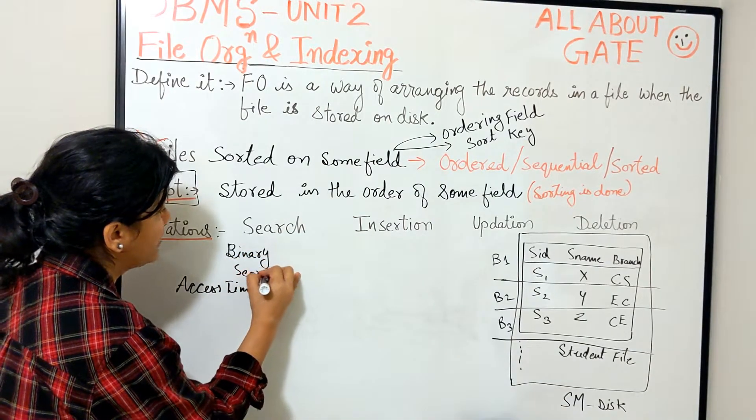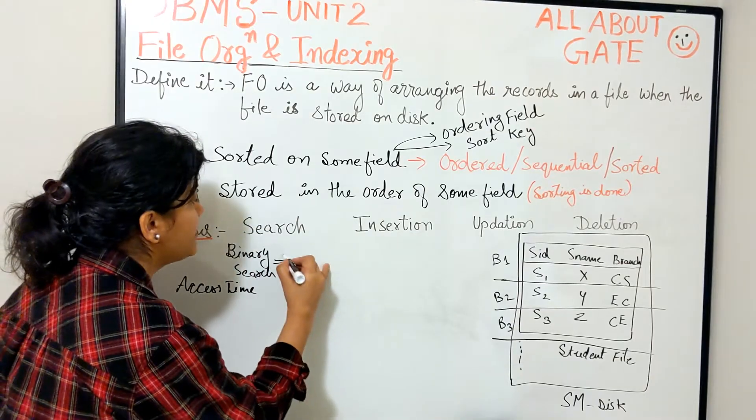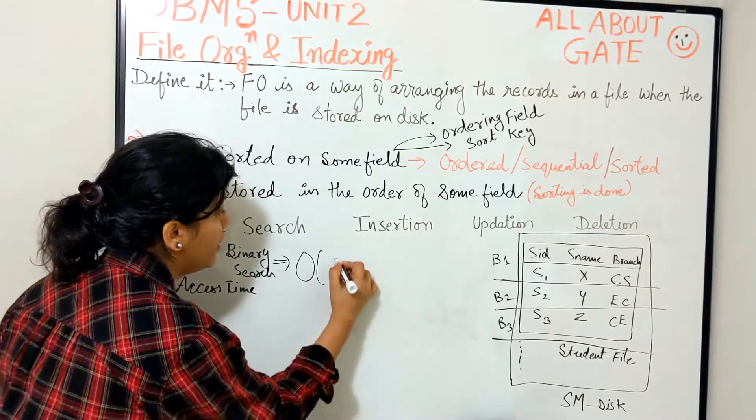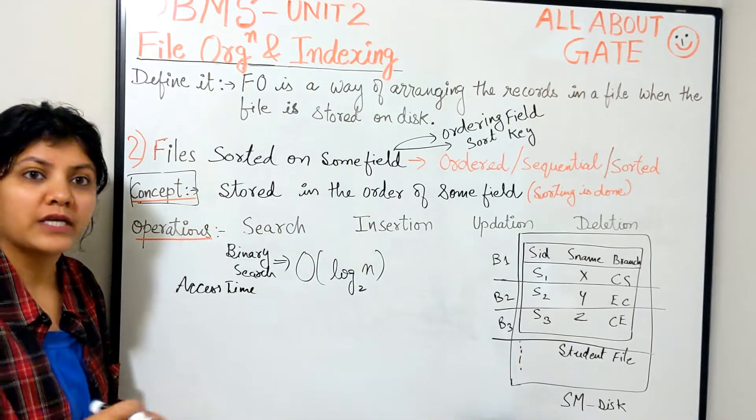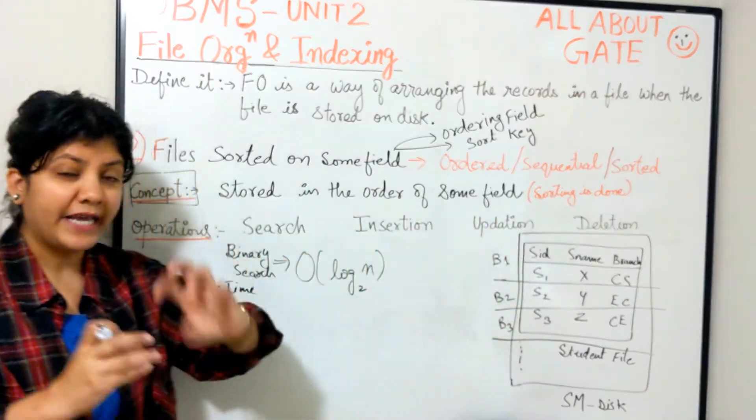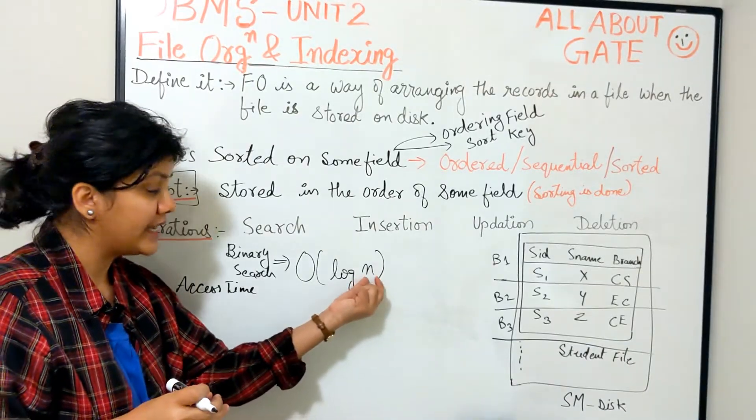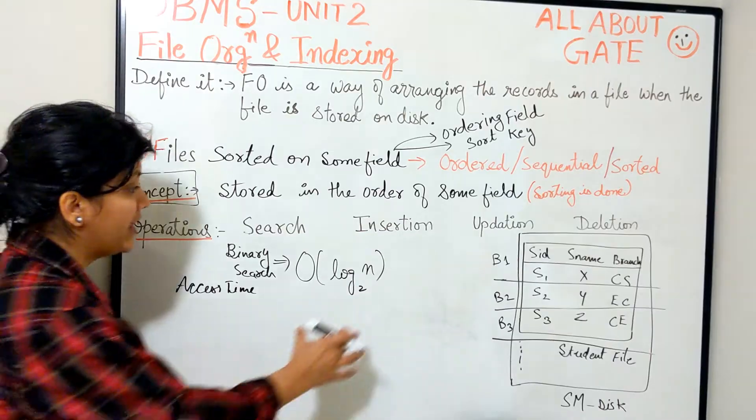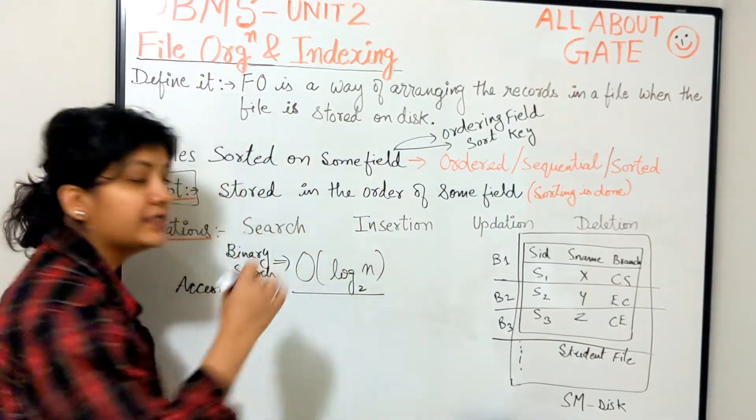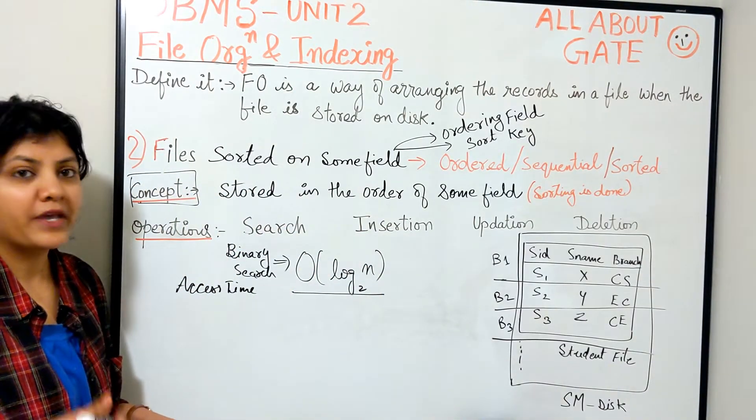The order of log base 2 n, where n is number of blocks. So if your file is taking up total number of blocks as n, then maximum in the worst case we have to make access to this particular value because it's binary search going to get applied.